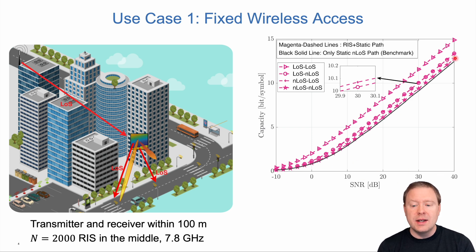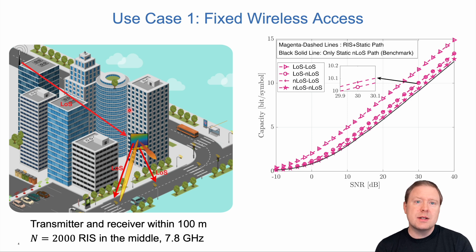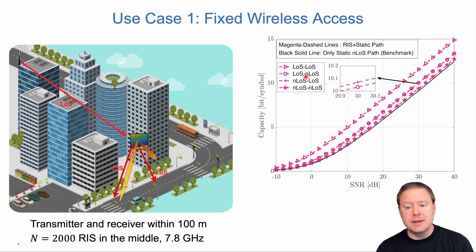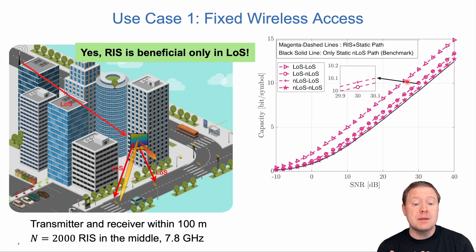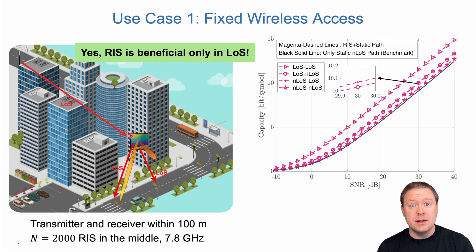The black line shows what we would get with only a non-line-of-sight path between the base station and the user locations — so this is what we achieve without a RIS. There are four other curves for different combinations of line-of-sight or non-line-of-sight. Most of them are rather close to the case without any RIS at all. It is only in the case where we have line of sight both to and from the RIS that we see a substantial improvement. This means RIS is beneficial only when we have line of sight and are creating a virtual line-of-sight path between the base station, RIS, and the user.